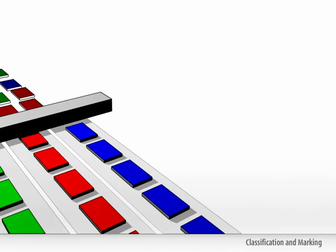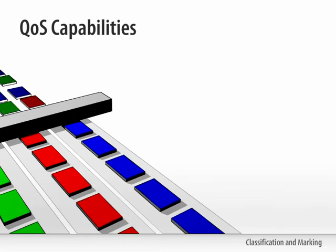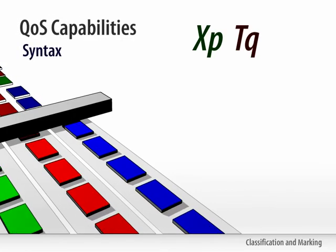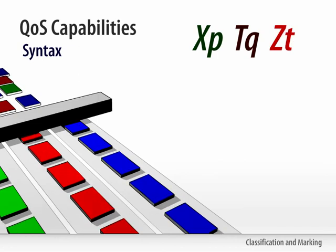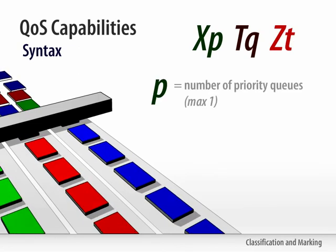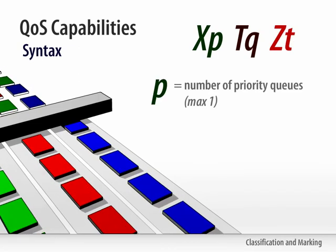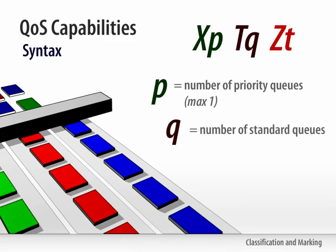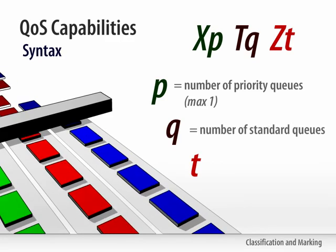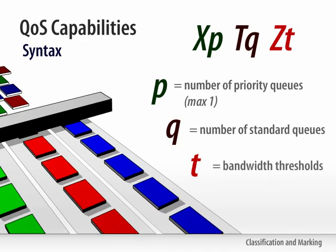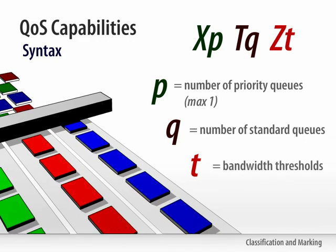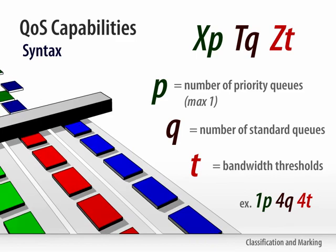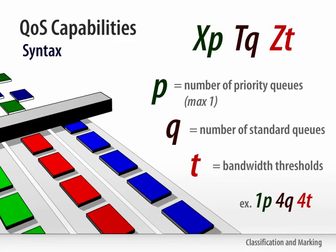Cisco classifies the QoS capabilities using the following syntax: XP, TQ, ZT — where P indicates the number of priority queues with a maximum of 1, Q indicates the number of standard queues, and T indicates the number of bandwidth thresholds that may be set for policing functions. For example: 1P, 4Q, 4T.